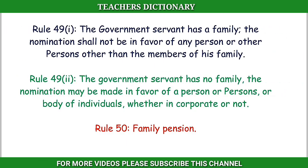Rule 49(1): Where the government servant has a family, the nomination shall not be in favour of any person other than the members of his family. Rule 49(2): Where the government servant has no family. Rule 50: The nomination may be made in favour of a person or persons or body of individuals whether incorporated or not.